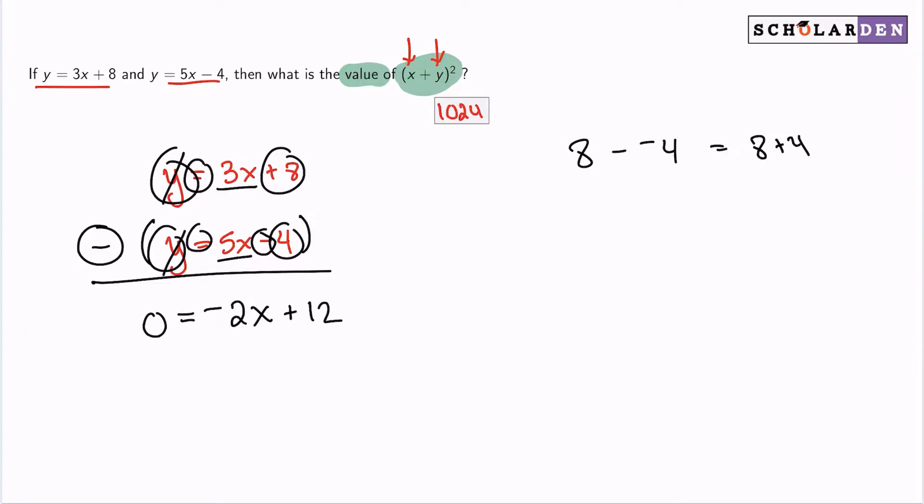And so there we are. So now we can solve for x by moving the 2x over. So now we have 2x equals 12, x equals 6 after we divide by 2 on both sides.